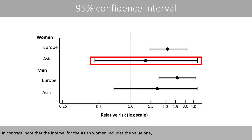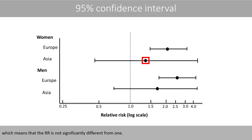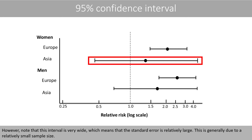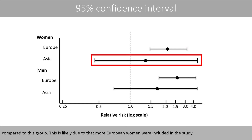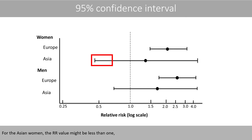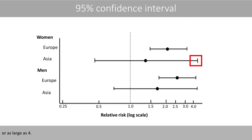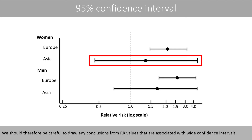In contrast, note that the interval for the Asian women includes the value 1, which means that the relative risk is not significantly different from 1. However, note that this interval is very wide, which means that the standard error is relatively large. This is generally due to a relatively small sample size. Since the interval for European women is much narrower, we are much more certain about the estimated relative risk value for that group. For the Asian women, their relative risk value might be less than 1 or as large as 4. We should therefore be careful to draw any conclusions from relative risk values that are associated with wide confidence intervals.